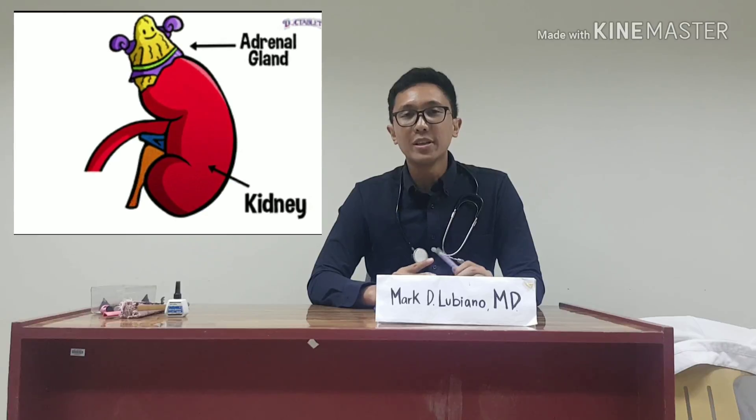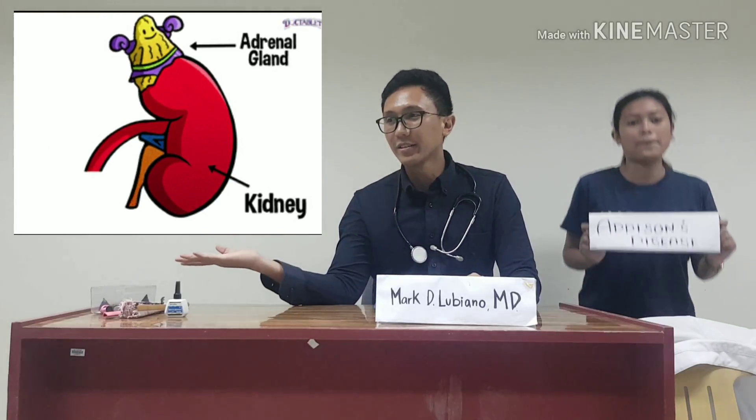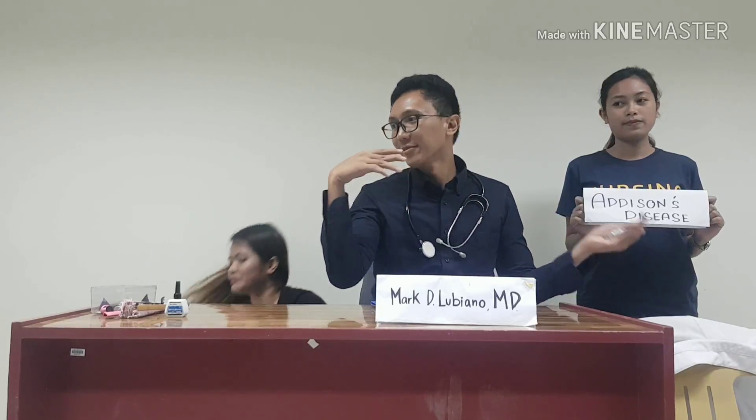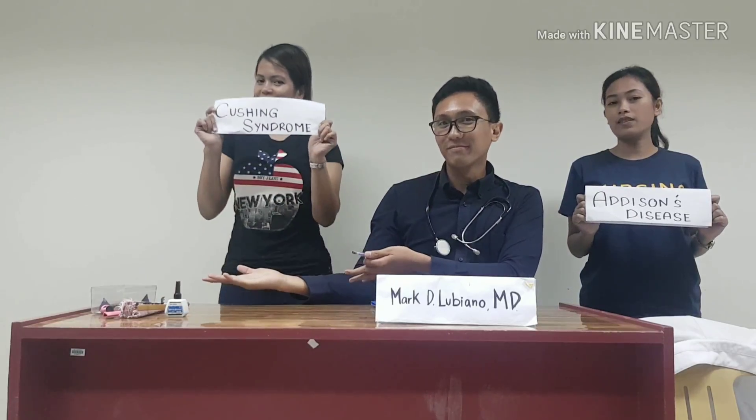I'm here to discuss adrenal gland disorders. There are two types: one is the hypoversion of it, which is Addison's disease, and the second one is the hyperversion of it, which is Cushing's syndrome. The first topic I will discuss is the hypoversion, which is Addison's disease.